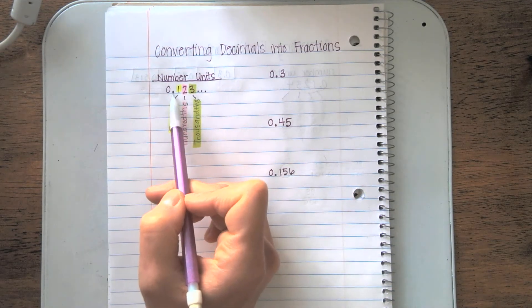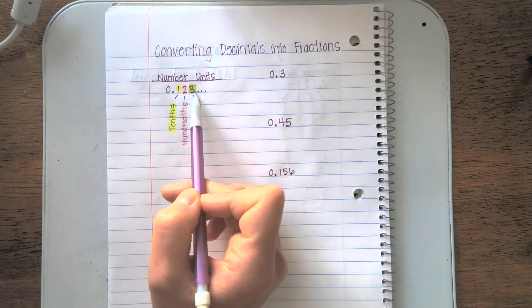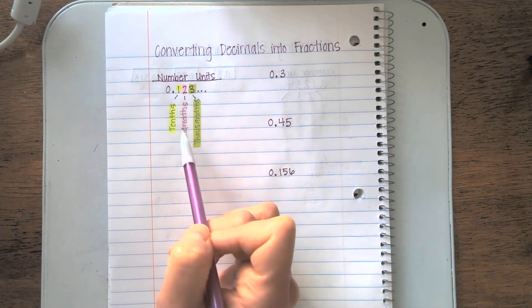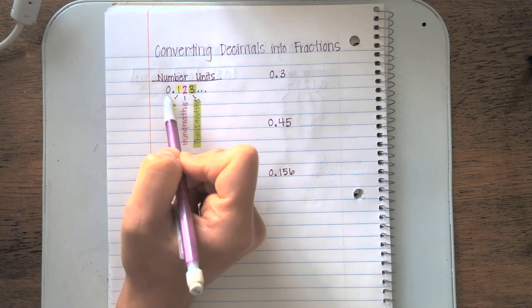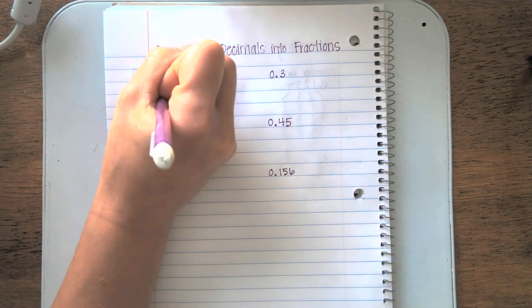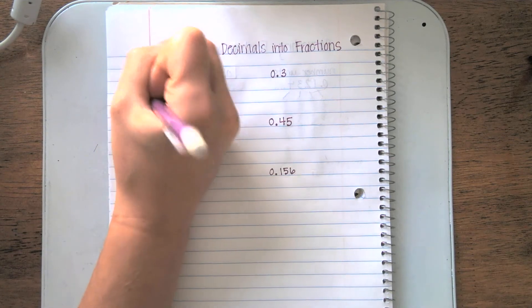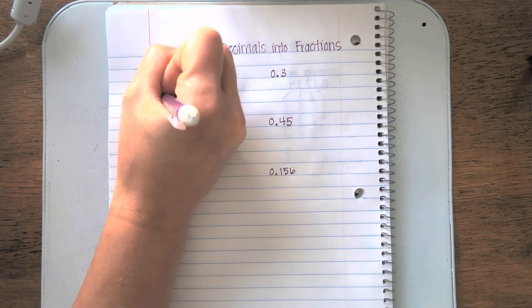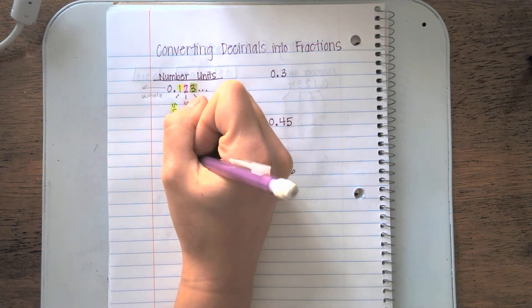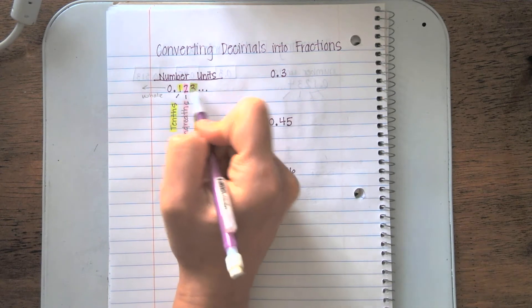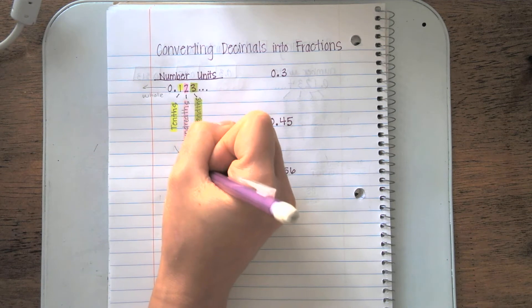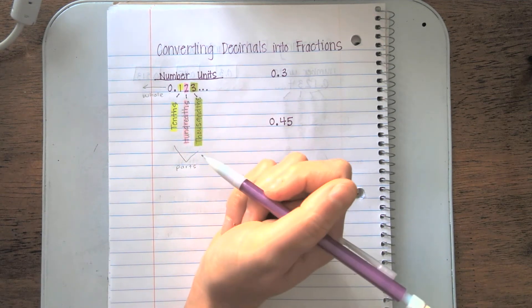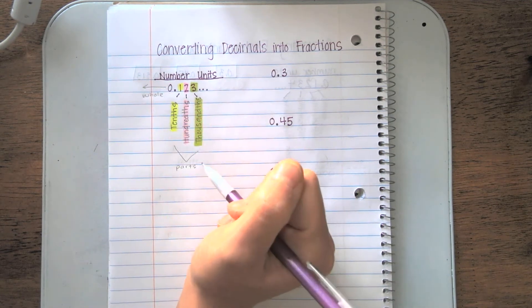Here you see 0.100 and 23 hundredths. I even have them labeled. Here's my decimal. All the numbers to the left of my decimal are my whole numbers. All the numbers to the right of my decimal are parts. And we have names for those parts, very similar to their whole parts.